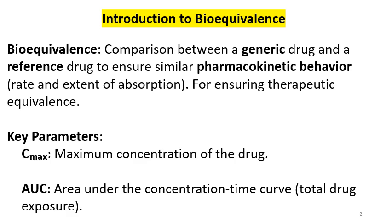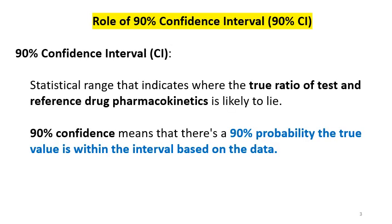Key parameters evaluated in a bioequivalence study are Cmax and AUC. Cmax is the maximum concentration of the drug reached, and AUC is the area under the concentration-time curve, representing total drug absorption. Cmax reflects the rate of absorption and AUC reflects the extent of absorption.